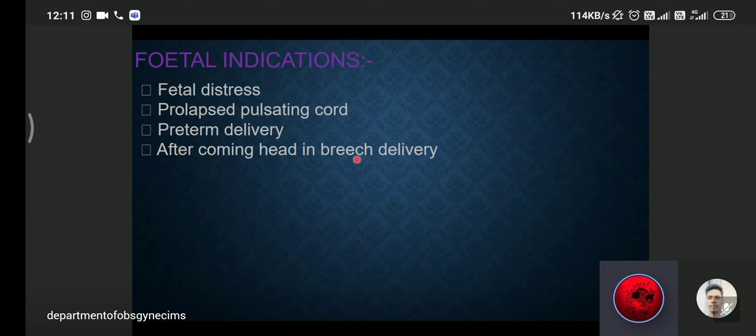Fetal indications: when there is fetal distress, prolonged pulsating cord, pre-term delivery, and after coming head in breech delivery. Pre-term delivery, that means if patient came in labor and then you have to deliver out the baby, then only you can use the forceps because it prevents damage to the scalp. Ideally, if the patient is in your OPD and then she was admitted and you plan to deliver her, then ideally C-section, not forceps application.